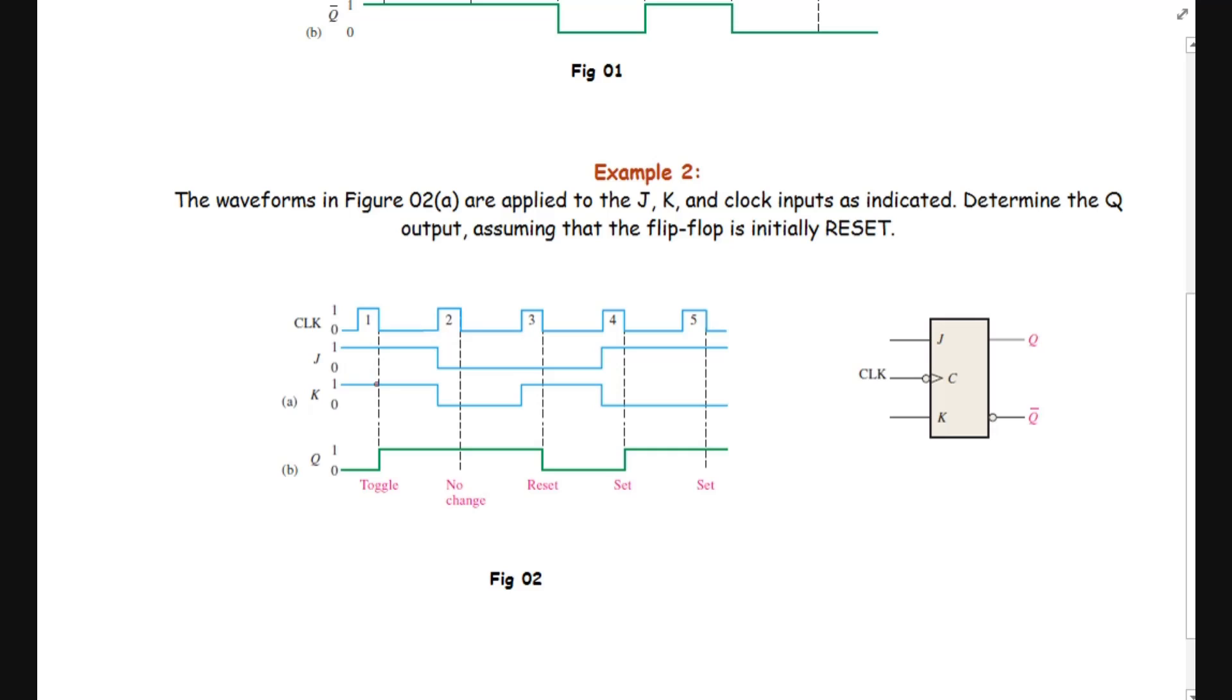Here we have the clock signal. J is 1, K is 1. Initially it is in reset condition, so the Q output will be 0. Then when the negative edge occurs, we have to see the value of J and K, which is 1. So we will get a complemented output. Q will be 1 and Q' will be 0.